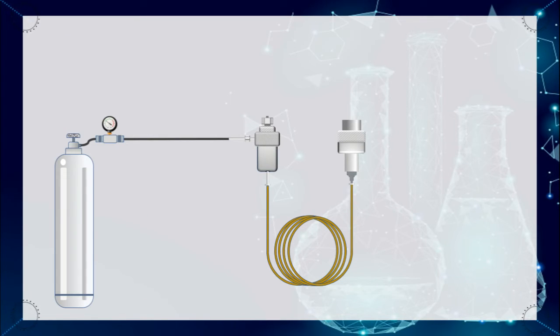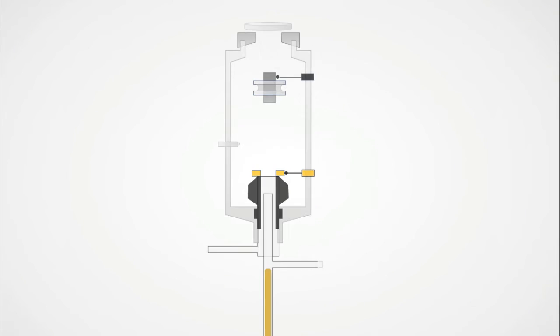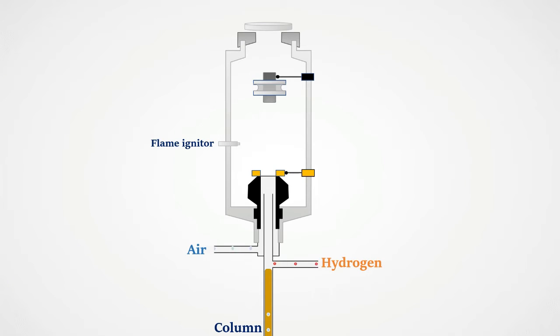As compounds elute from the column, they interact with the detector. Different types of detectors can be used, such as the flame ionization detector, thermal conductivity detector, and mass spectrometer detector.